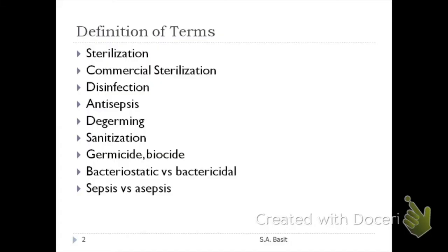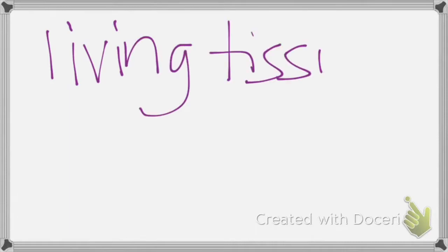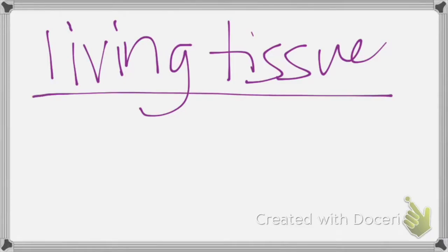What is the difference between disinfection and antisepsis? When you say antisepsis, you are removing pathogenic organisms from living tissue. When you remove pathogenic organisms from living tissue, the process is known as antisepsis. During disinfection we use disinfectants; during antisepsis we use antiseptics. Antiseptics are milder compared to disinfectants because they involve living tissue.